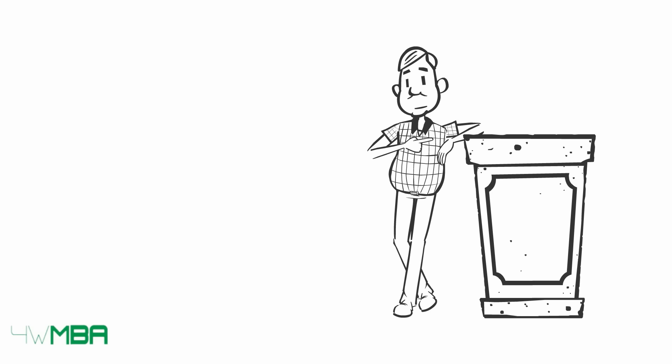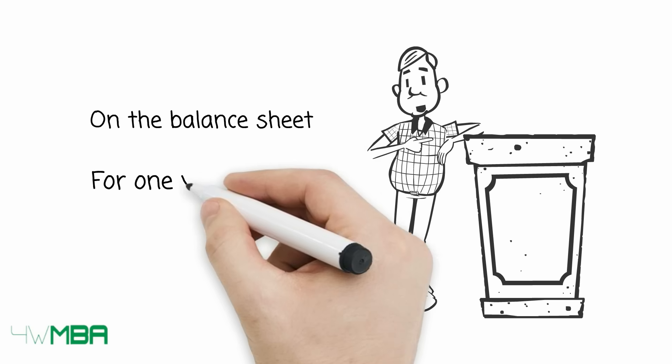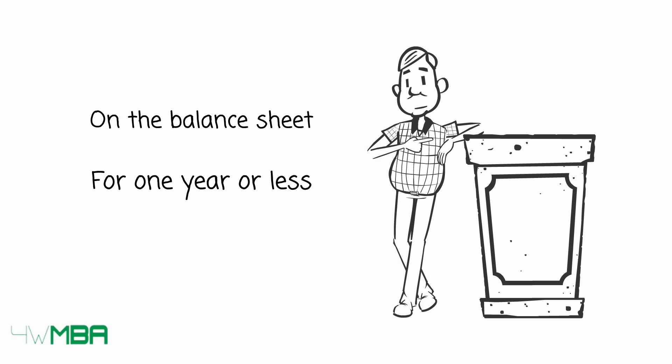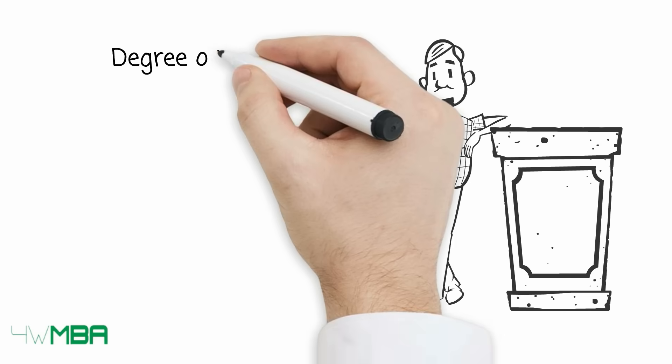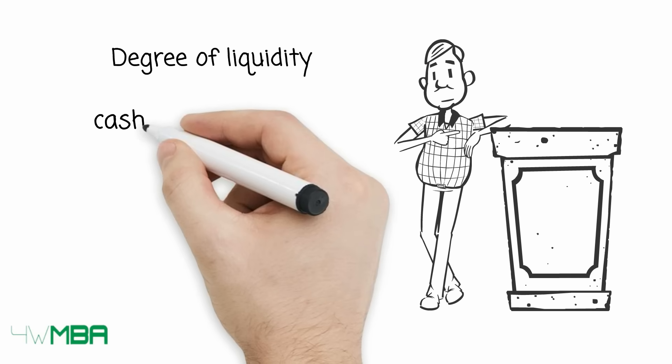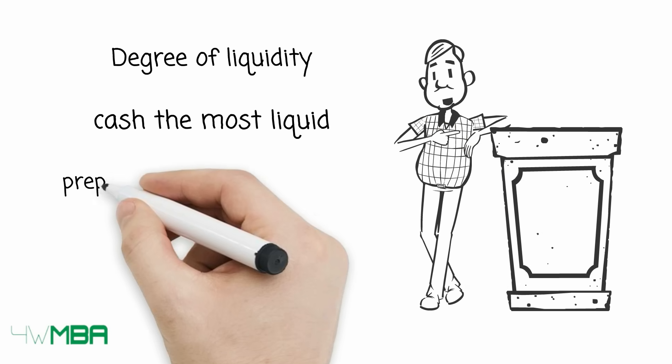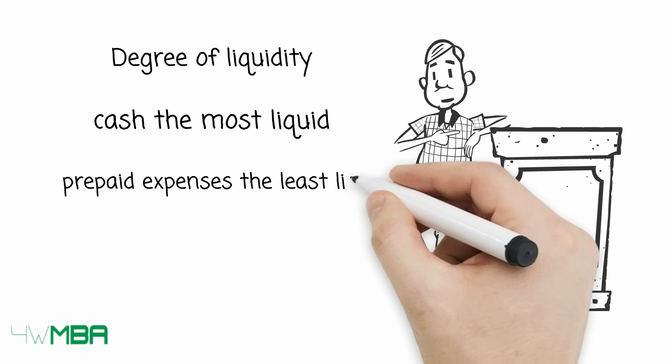The current assets are called such because they are usually on the balance sheet for one year or less. The current assets are usually listed on the balance sheet according to their degree of liquidity. Therefore, cash is the most liquid while prepaid expenses are the least liquid.